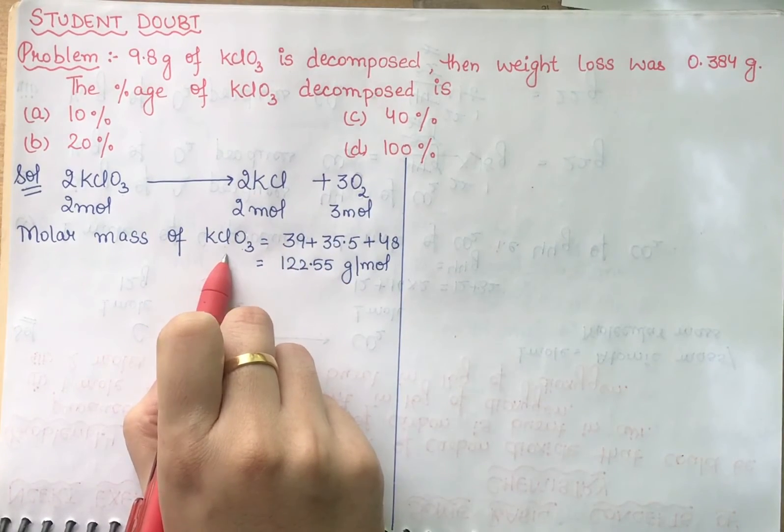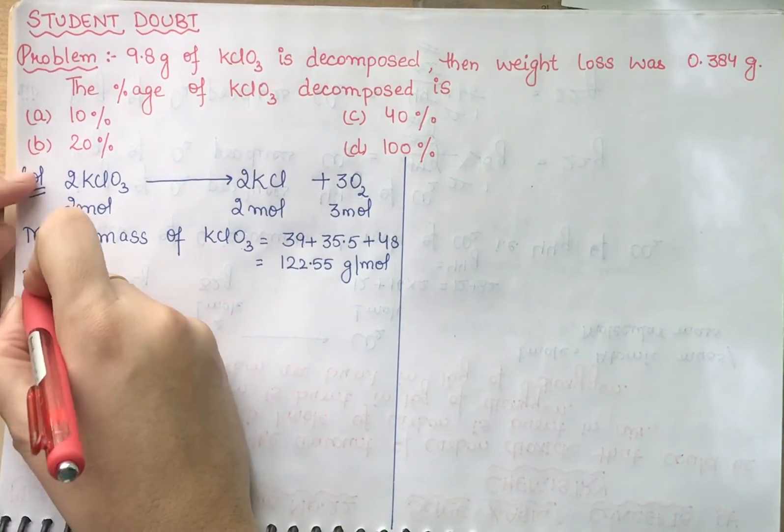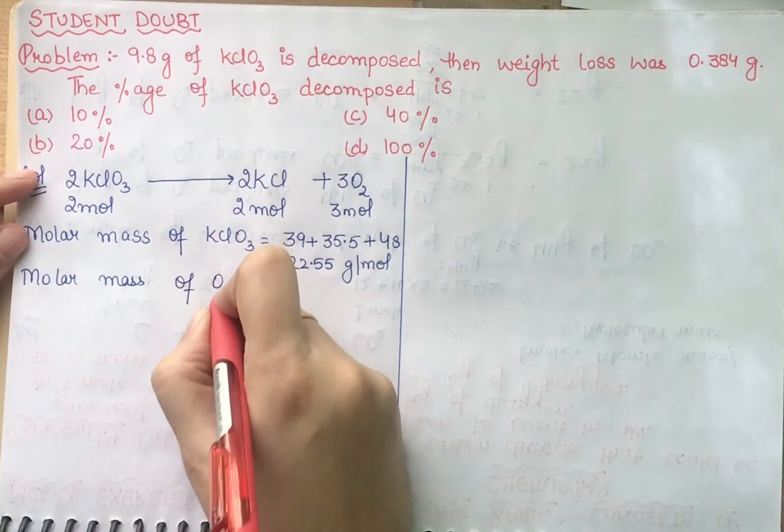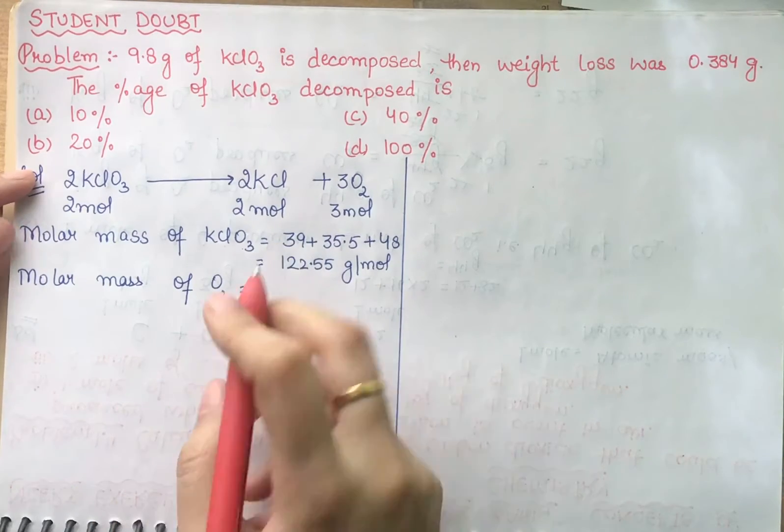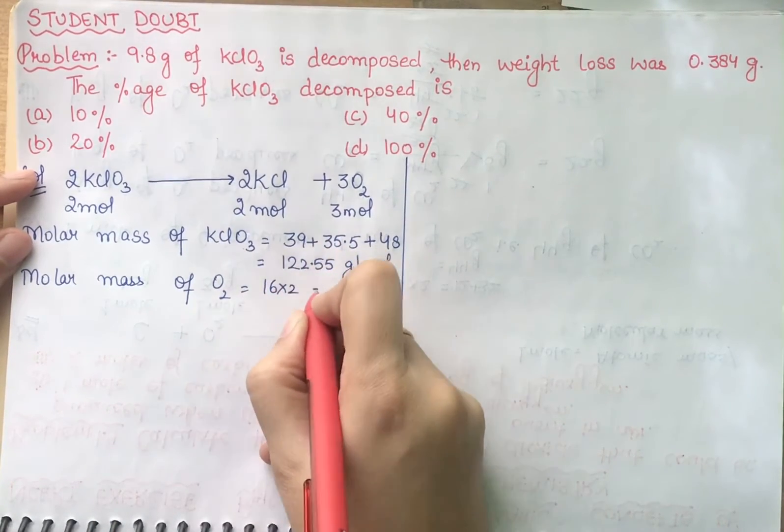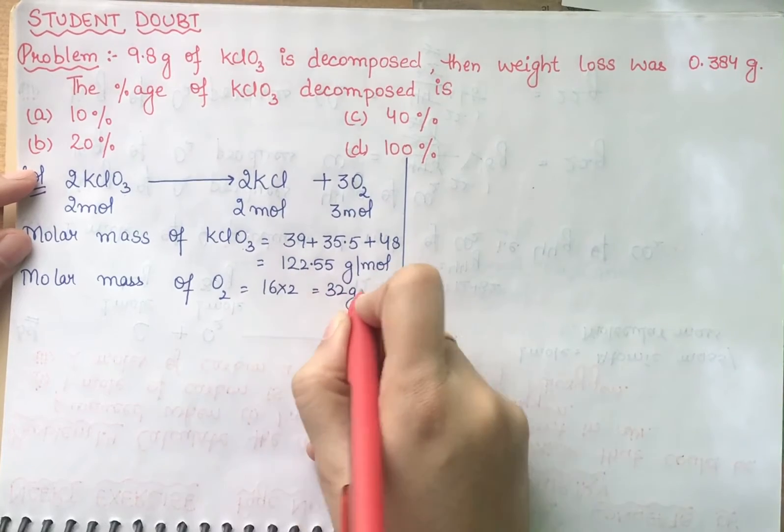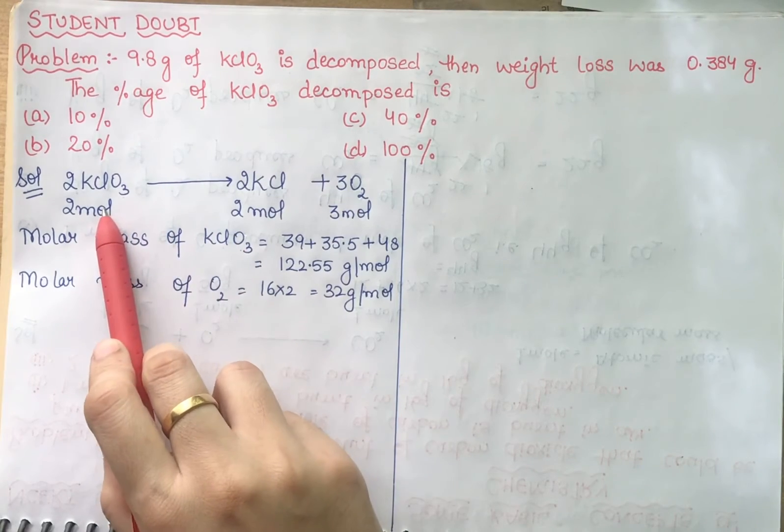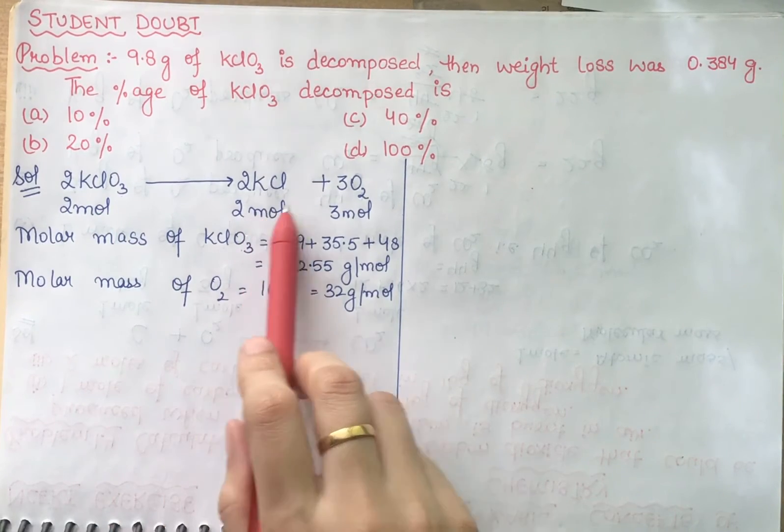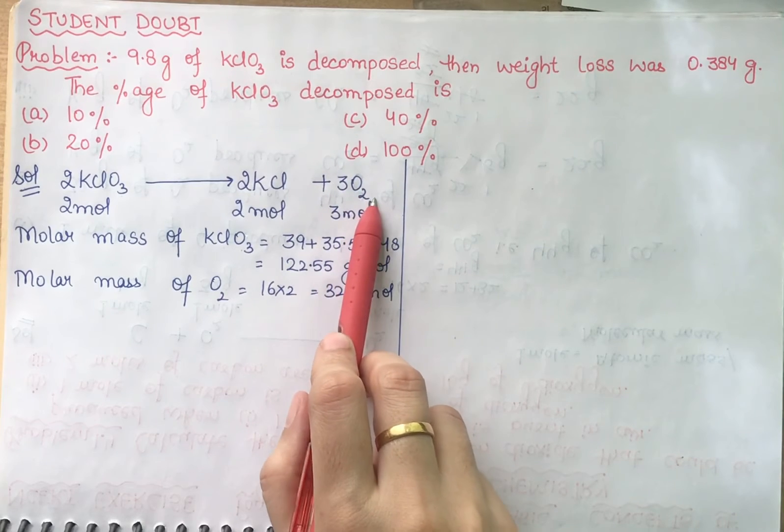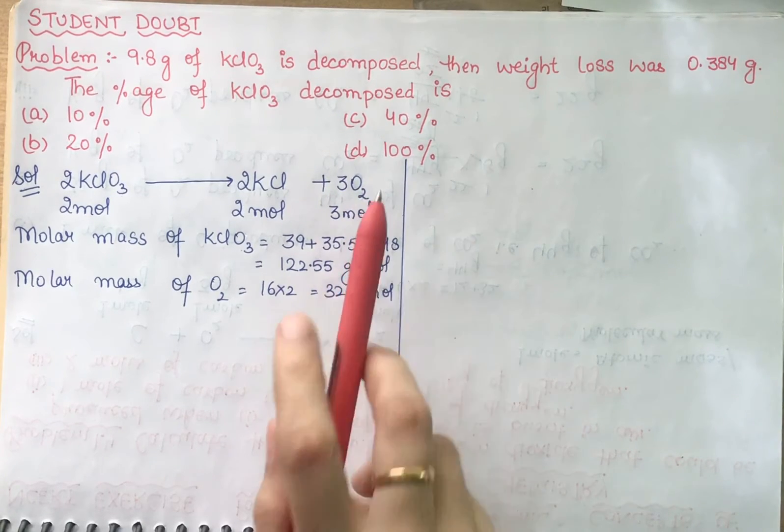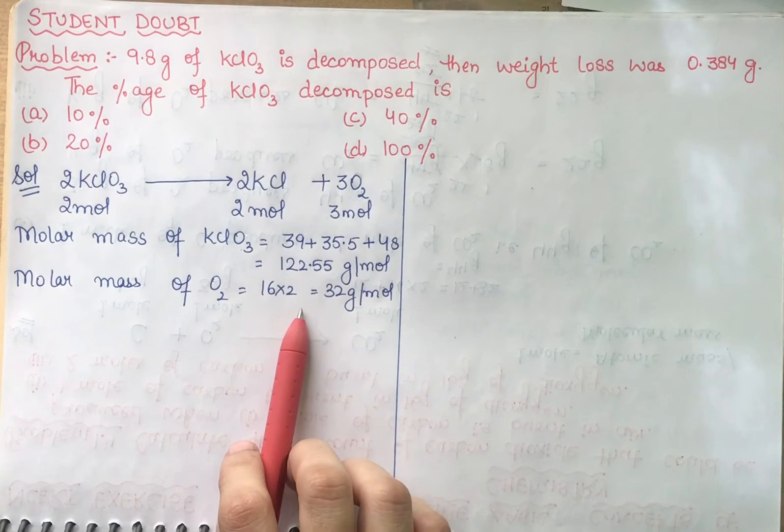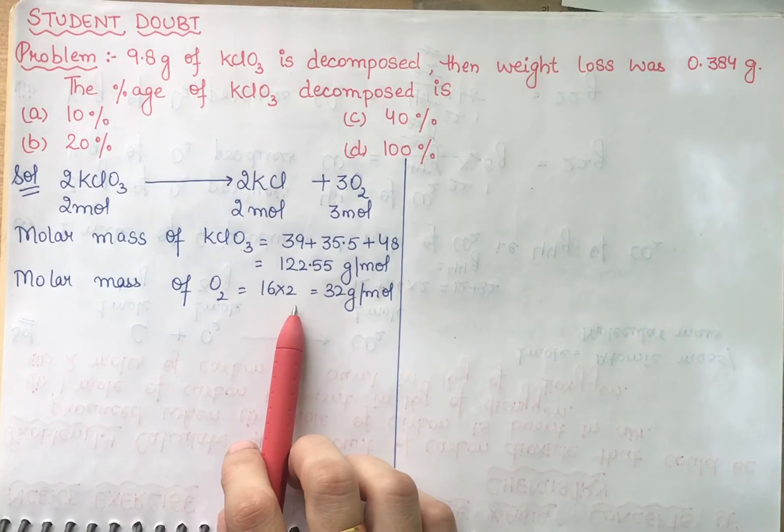In case of KClO3, the molar mass of oxygen O2 is 16 times 2, that means 32 grams per mole. Now we have seen molar mass of these, which means decomposition, which means weight loss. What will happen? Because oxygen will evaporate, and we have KCl, so that's why we have seen molar mass.